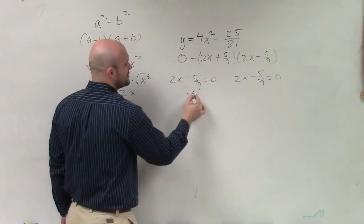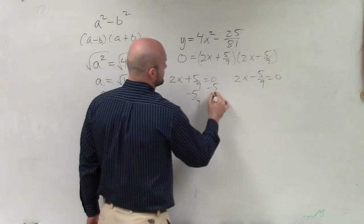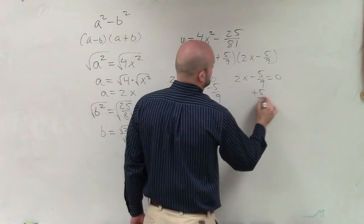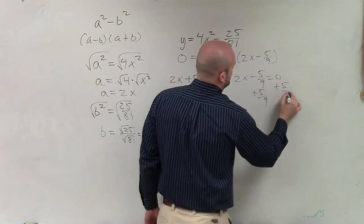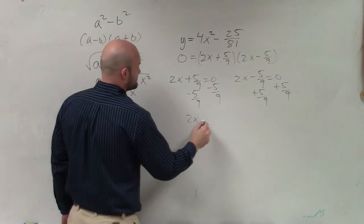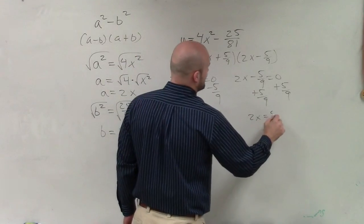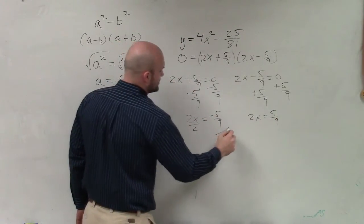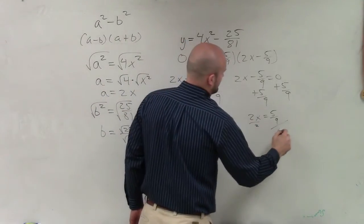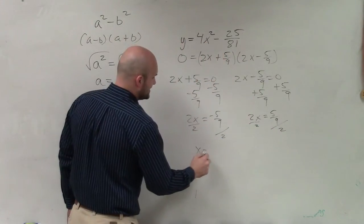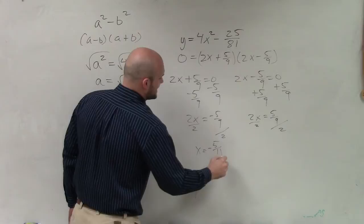Now I solve for x by using my inverse operations. And therefore, I have 2x equals negative 5 over 9. Here I have 2x equals positive 5 over 9. Now I divide by 2. And therefore, I have x equals negative 5 over 18.